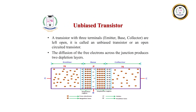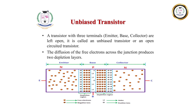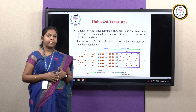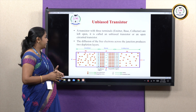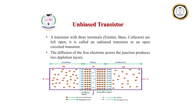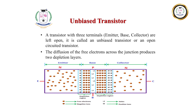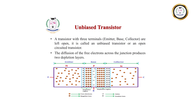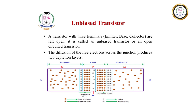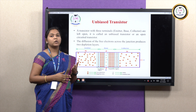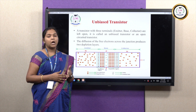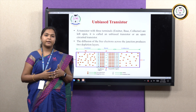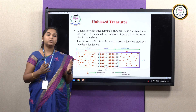Coming to the unbiased transistor — an unbiased transistor can also be said to be an open-circuited transistor. Here, all three terminals — emitter, base, and collector — are left completely open without biasing. In a diagram, the emitter and collector are made up of N-type material and the base region is made up of P-type material for an NPN transistor. In this NPN transistor, you have two junctions: the emitter-base junction and the collector-base junction. No external battery supply is applied to the transistor.